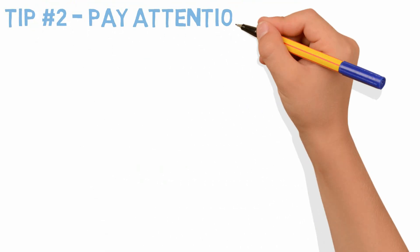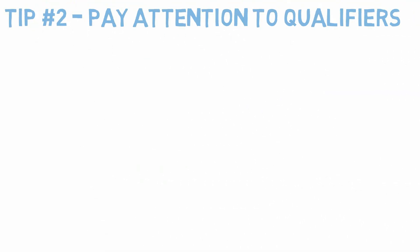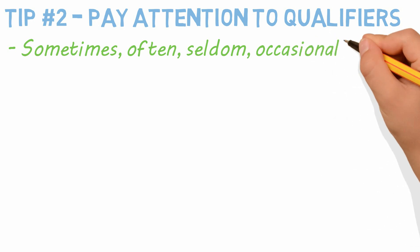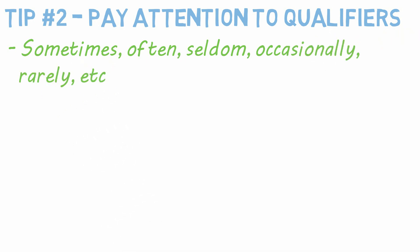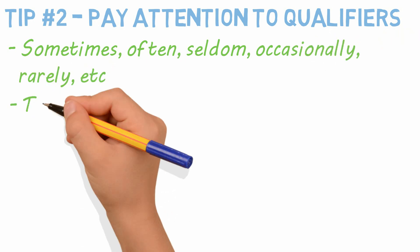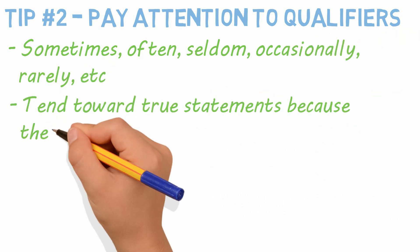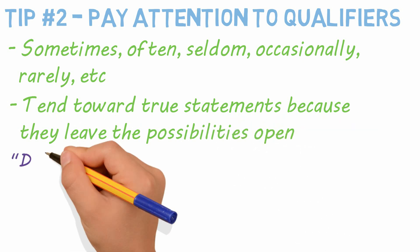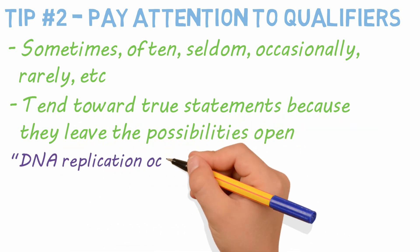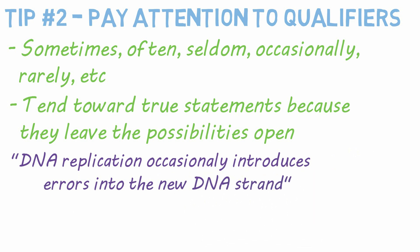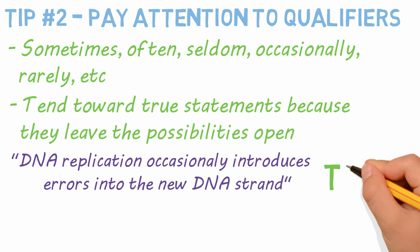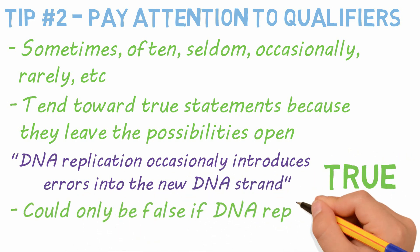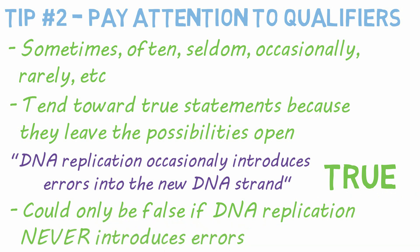Tip number two is to pay attention to qualifiers. Qualifiers are words like sometimes, often, seldom, occasionally, rarely, etc. These tend toward true statements because they leave the possibilities open. For example, a statement like 'DNA replication occasionally introduces errors into the new DNA strand' is likely to be true — and it is true. The only way it could be false is if DNA replication never introduces errors.